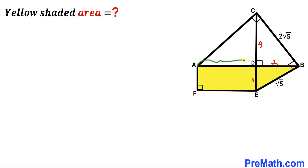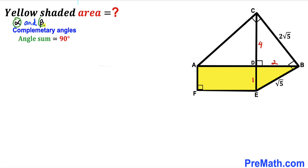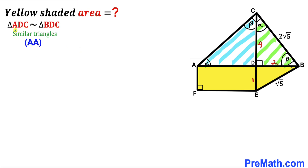Now let's calculate side length AD. We'll assume alpha and beta are two complementary angles whose sum equals 90 degrees. In triangle EBC, this angle is alpha, so the remaining angle is beta. In triangle CDB, the same angle assignments apply, so the remaining angle is alpha. Therefore triangles ADC and BDC are similar triangles by the Angle-Angle similarity theorem.